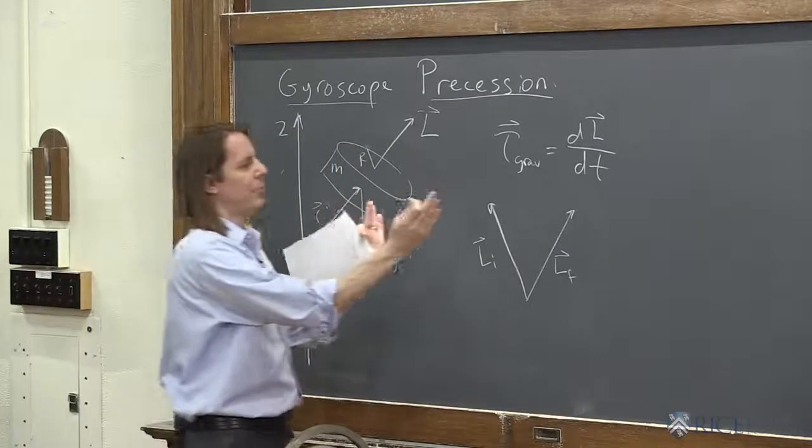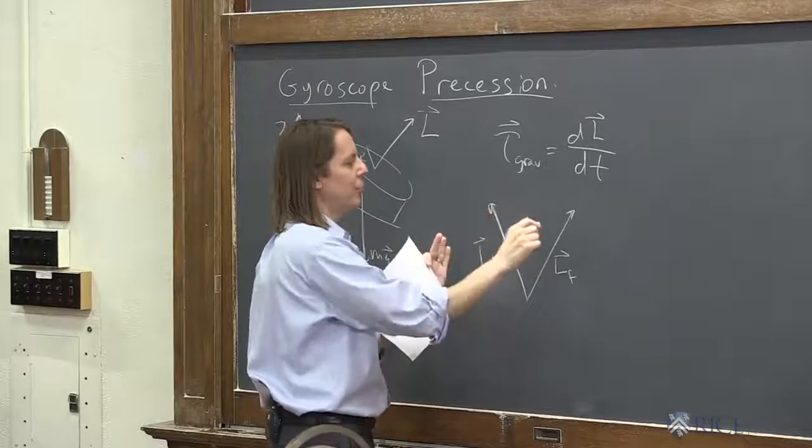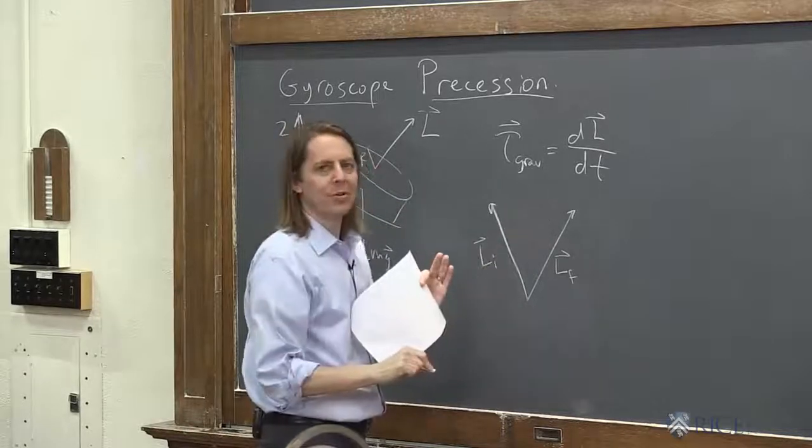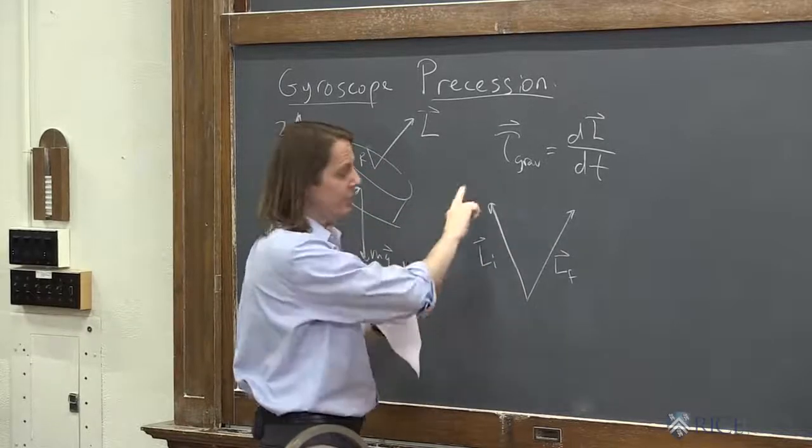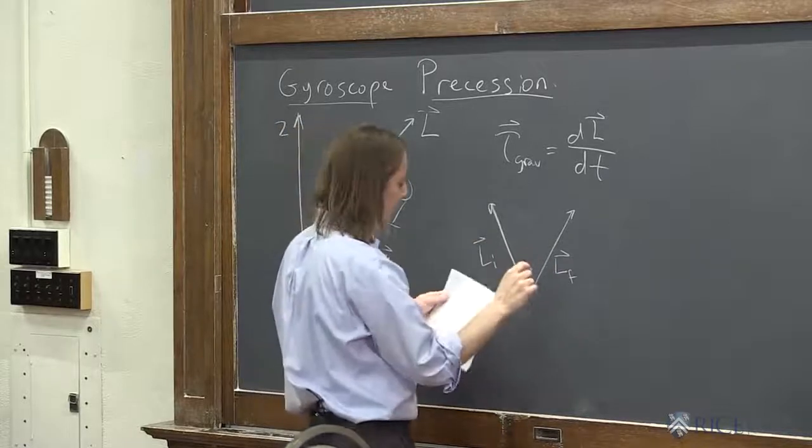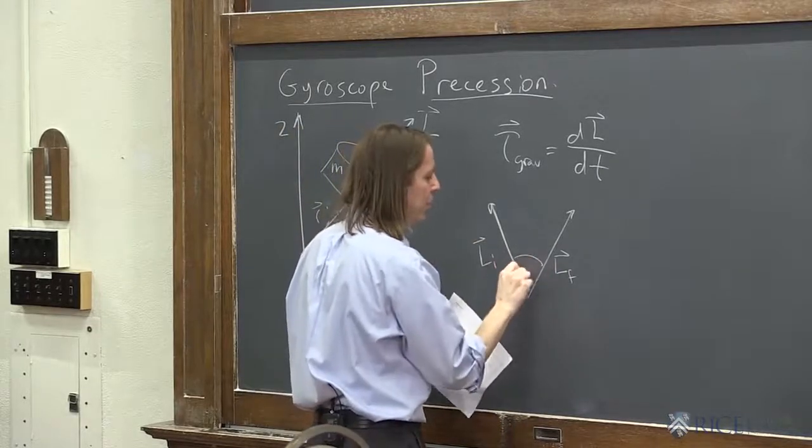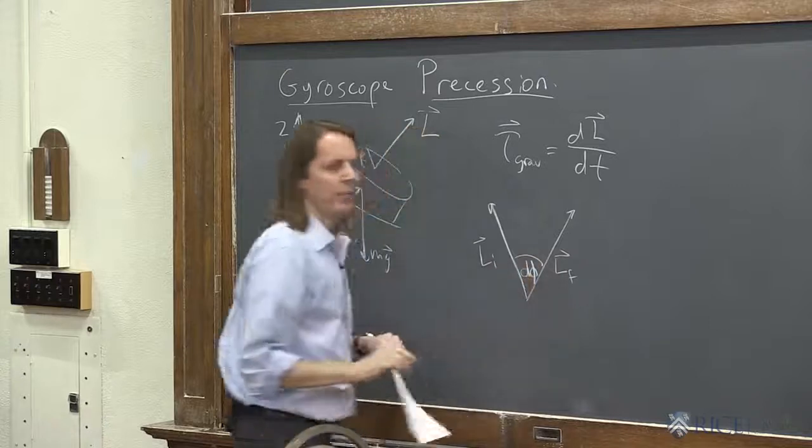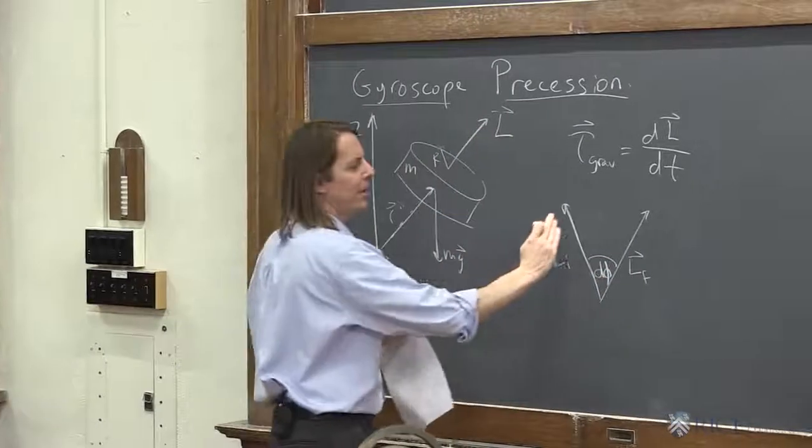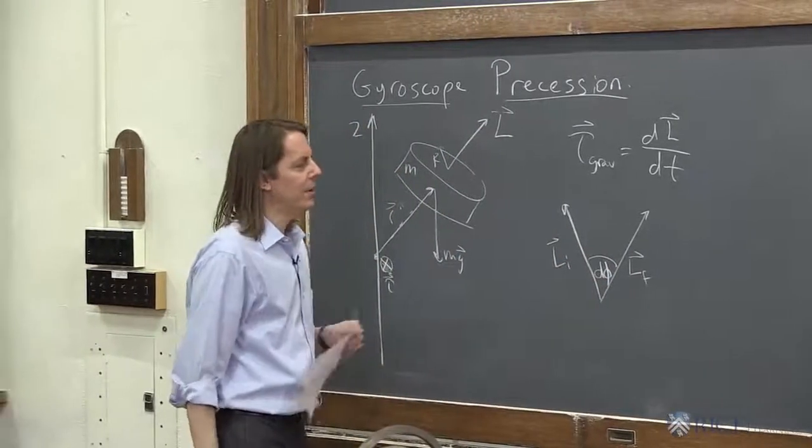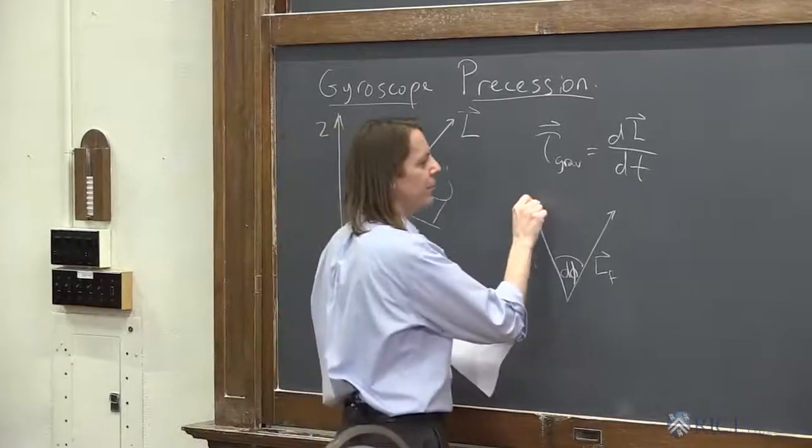And before we thought about how when those are really small, then it's basically circular motion because the dLs are always perpendicular. So that's still true. It is just a circular rotation of this L vector. But we're drawing it a little bigger so we can think about what angle do we go through when that happens. We're going to call that phi. Go through a little angle d phi. And the dL vector looks something like that.